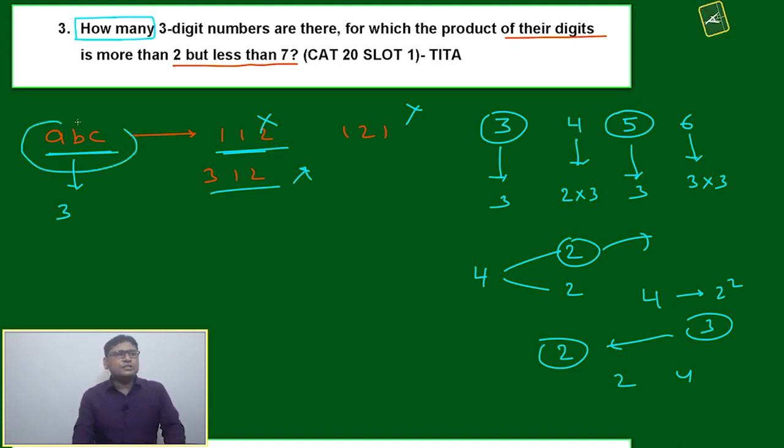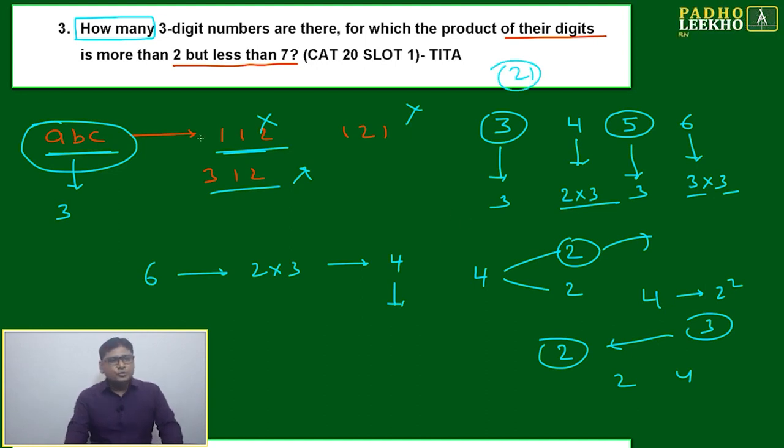Two times three. Similarly, six you can write as two times three, and total it will be four factors. You can remove one - three times three. Total will be 21. No need to do all this exercise. This is the only way of approach we have to change.